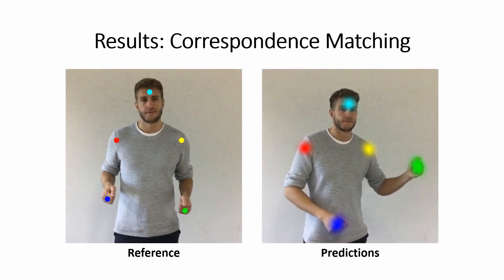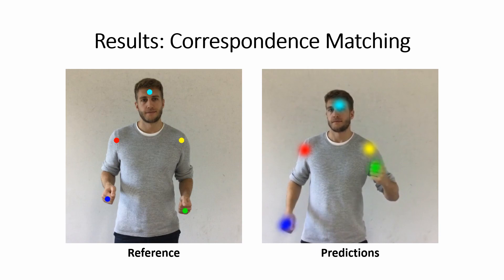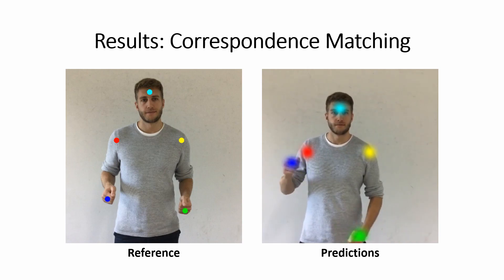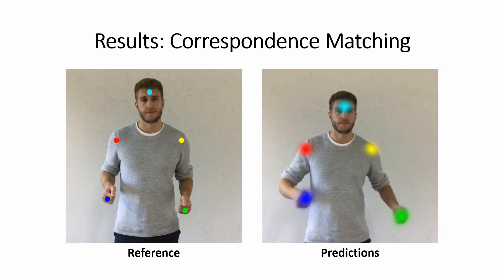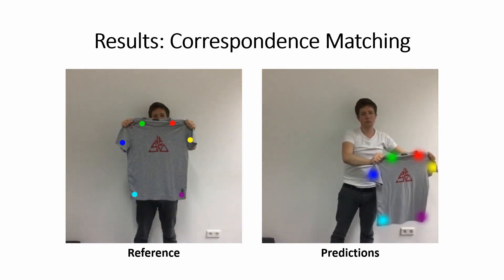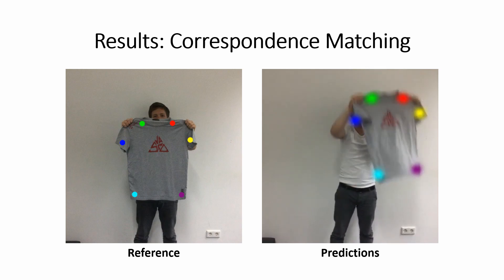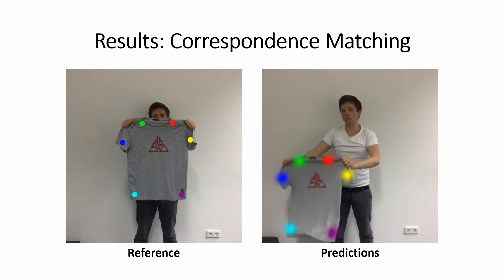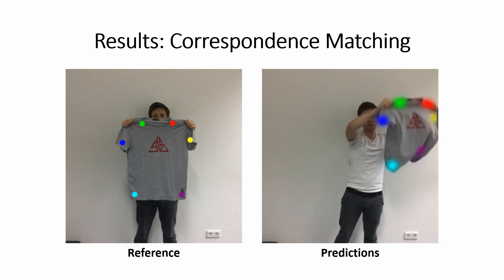Here, we show some qualitative heatmap prediction results. For a few sampled points in the reference frame on the left, the network predictions in the current frame are shown on the right. We observe that both human and non-human correspondences are estimated robustly, even in the presence of fast motion and large deformations.